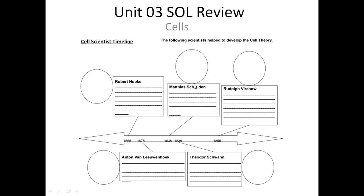Then we go to Schleiden, who comes along quite a few years later — about 150 years — and he starts looking at plant cells and seeing that plants are made up of cells. Then Schwann comes in in 1839, the next year, and actually sees that animals are made of cells. And then Rudolf Virchow comes in and starts seeing organelles inside of cells, and also comes up with the finalized cell theory.